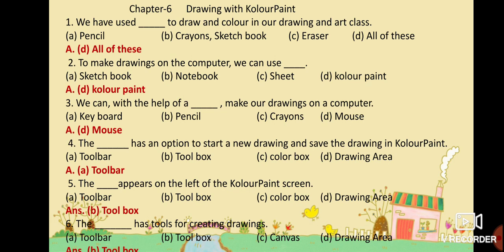MCQ No. 2: To make drawings on the computer we can use dash. Option A: Sketchbook. Option B: Notebook. Option C: Sheet. Option D: Color Paint. Your answer is Option D: Color Paint. To make drawings on the computer we can use the Color Paint application.